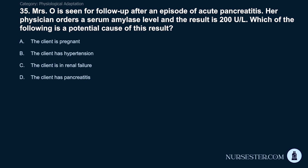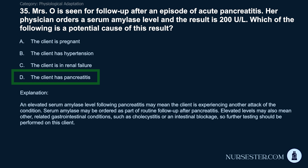Question 35: Mrs. O is seen for follow-up after acute pancreatitis. Her serum amylase level is 200 U/L. Which is a potential cause? A) The client is pregnant. B) The client has hypertension. C) The client is in renal failure. D) The client has pancreatitis. Correct answer: D. The client has pancreatitis. An elevated serum amylase following pancreatitis may mean the client is experiencing another attack. Elevated levels may also indicate other related GI conditions such as cholecystitis or intestinal blockage, so further testing should be performed.